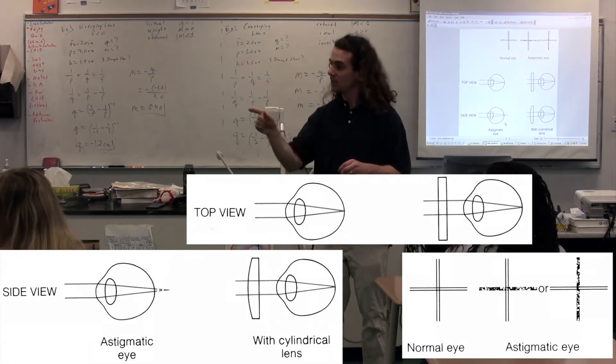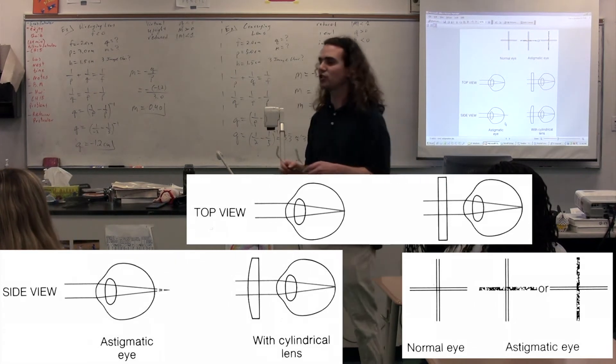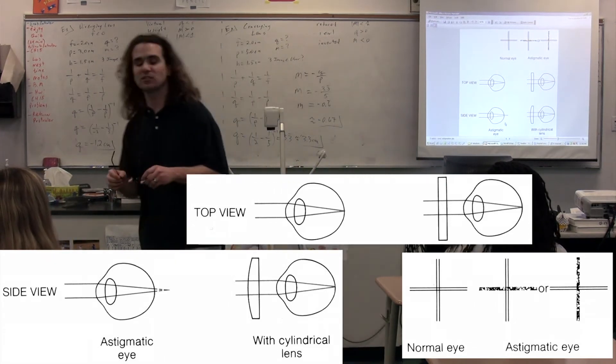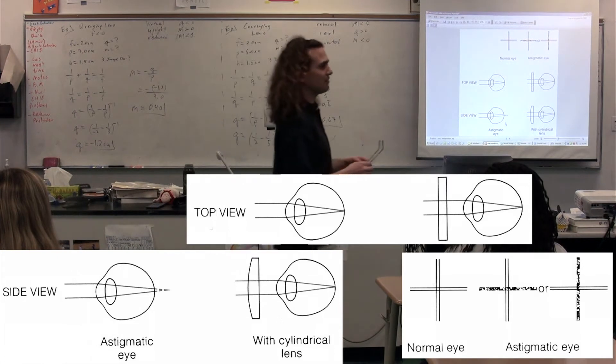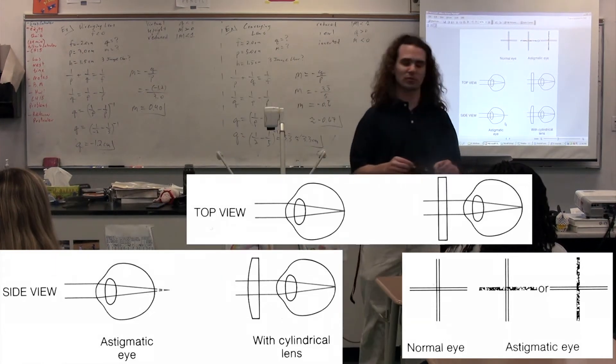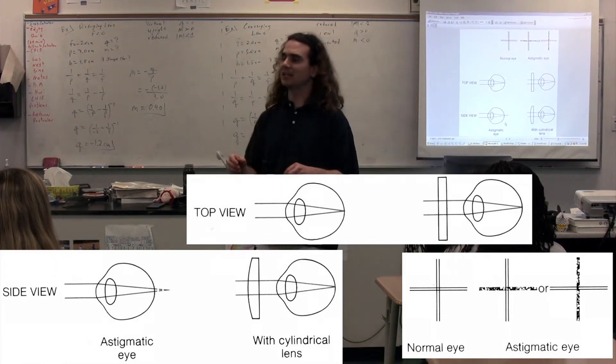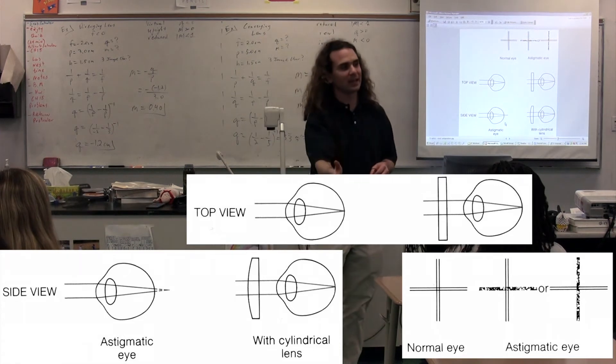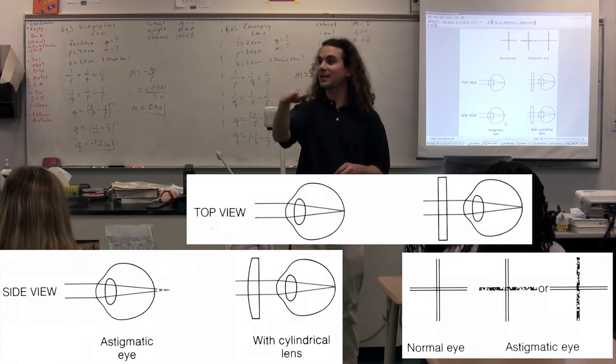What does it mean to have an astigmatism? Your eyeballs. We have an issue with the shape of your eyeball. Rather than being shaped as a sphere, your eyeball is shaped more like a football. It's squished, unfortunately. And what happens here is that the focal length on one plane versus the focal length on another plane are different.